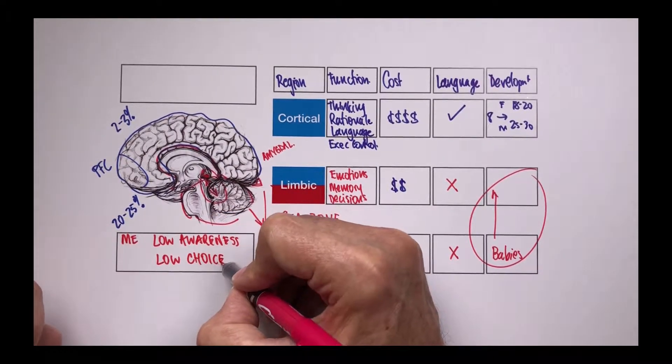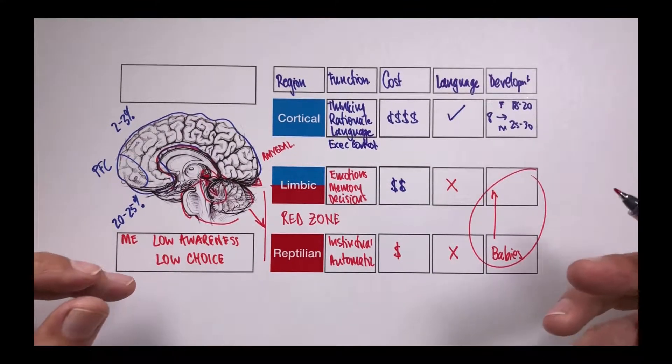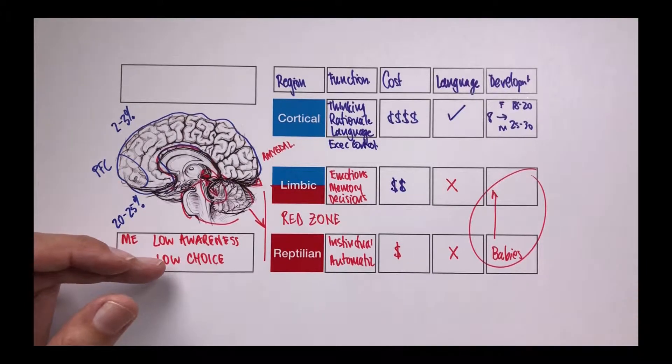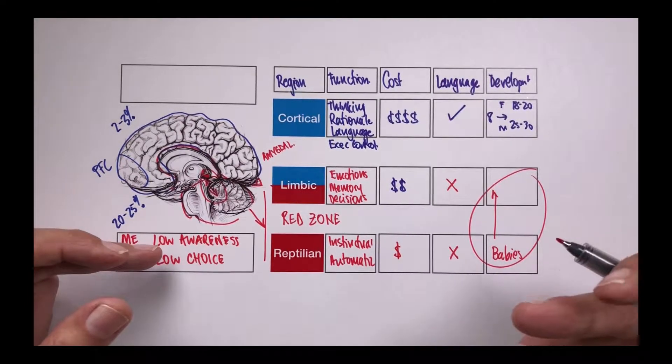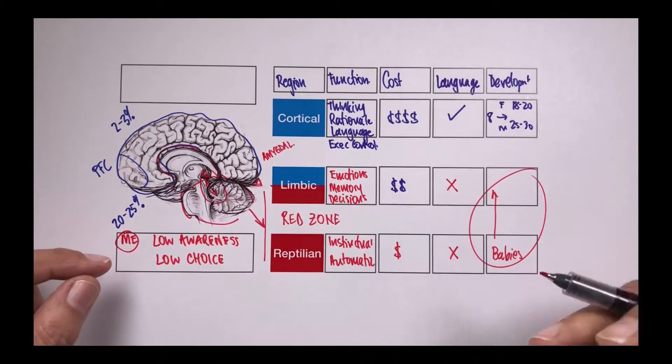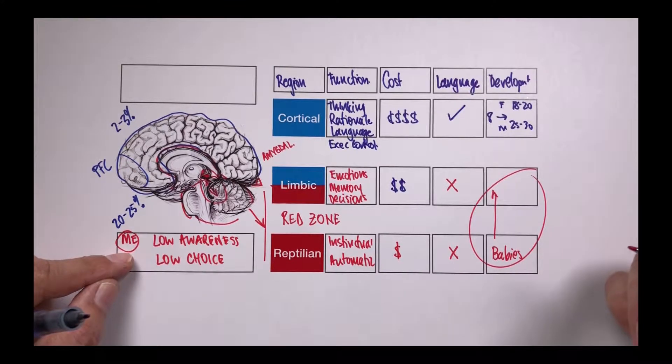What we see in this part of the brain is a focus on me. We have low awareness and also low choice. In other words, I'm in a lower state where I can see what's available to me in terms of the choices I can make. And I am not aware of the impact of my emotional state on others or it's lower than it might normally be. And the focus of my behavior is very much about me.